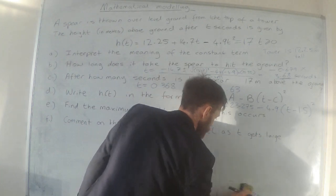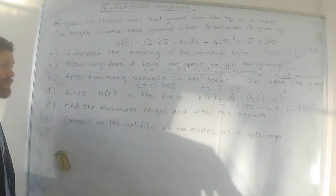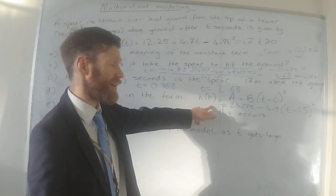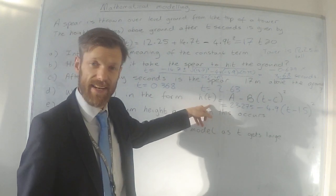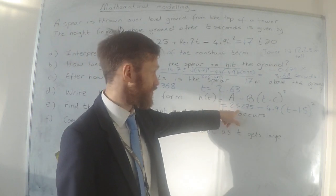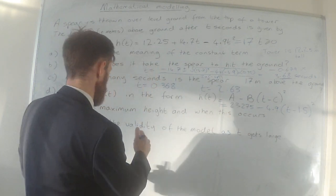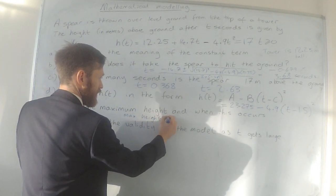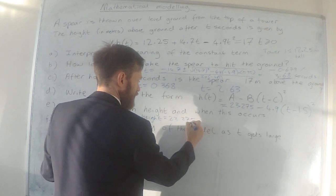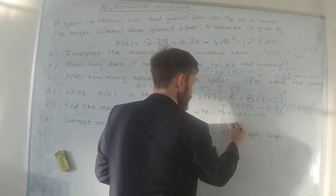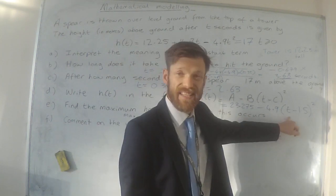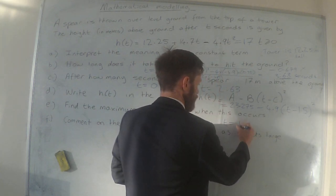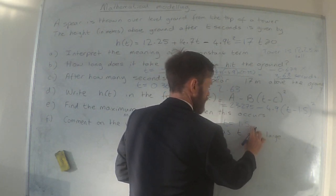Part E says to find the maximum height and when that occurs. Well, from part D, this is easy now. I can see that the maximum is 23.275. So max height equals 23.275 metres, and that's going to occur if this is zero, and that's going to be zero when t is 1.5, so 1.5 seconds.